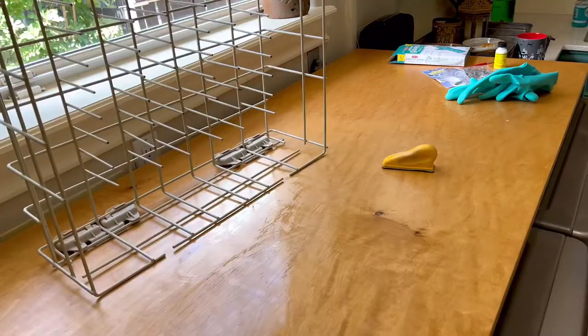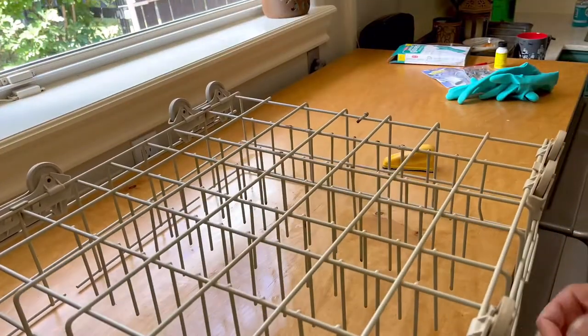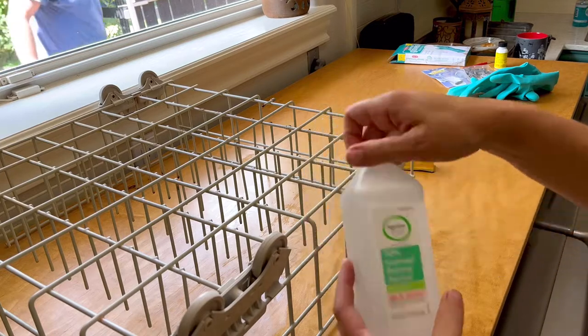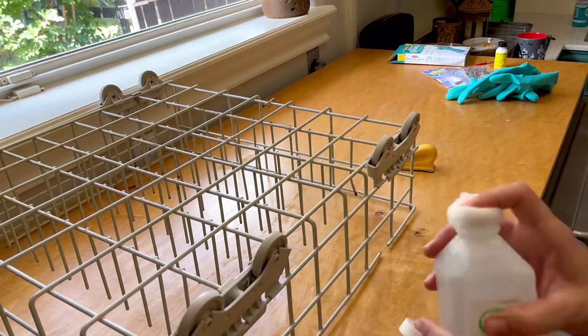After you've finished sanding all of those rusty spots, it's time to move on to cleaning up all of the leftover loose rust with alcohol. So this is just regular rubbing alcohol and a cotton pad.